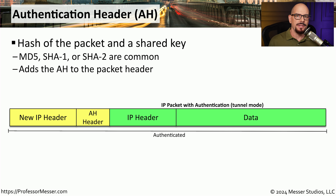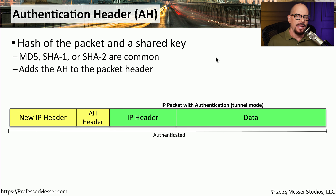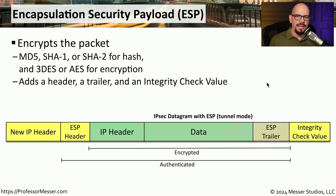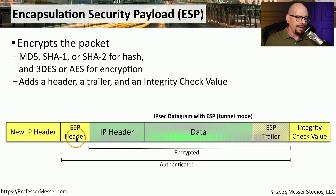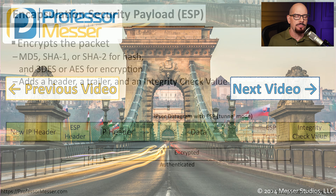Earlier we mentioned the two protocols commonly associated with IPSEC. One is the Authentication Header, or AH. AH is used to validate the information you're receiving over an IPSEC tunnel. If you're only using AH mode, you're sending all information over the network in the clear, but including additional hashing to ensure the integrity of that data. However, in most cases we want to encrypt the data, and for that we use Encapsulation Security Payload, or ESP. ESP encrypts the original data and the associated trailer, then wraps the packet with a new IP header, an ESP header, and an integrity check value at the end. This encrypts all of your original data while also providing the authentication needed to ensure the data is received properly on the other side.